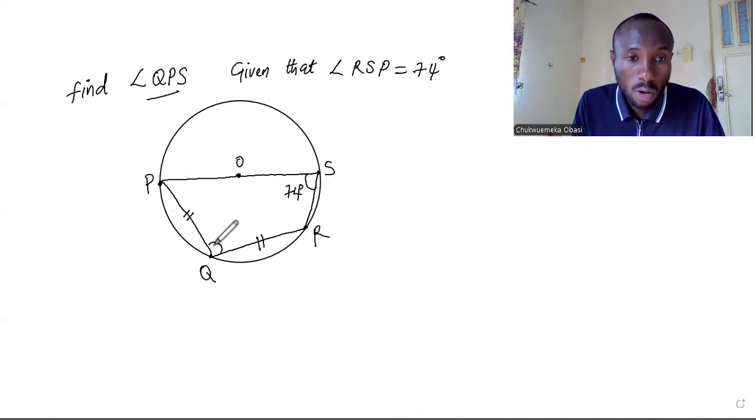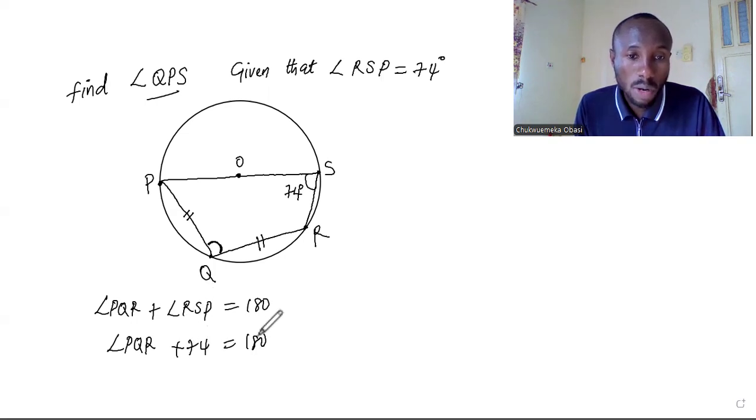So it means that this angle here, we can call this angle PQR. So that means angle PQR plus angle RSP is equal to 180 degrees. So angle PQR is what we are looking for, we don't know. And we know what is RSP, that's 74, and that is equal to 180. So angle PQR is just taking 74 from 180, and that will be 106.